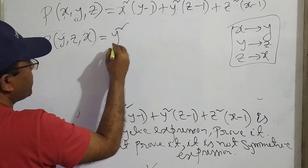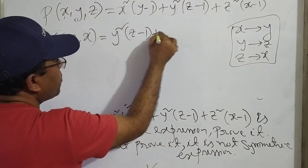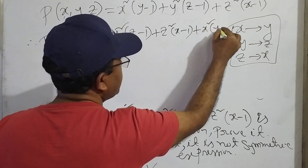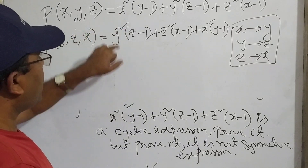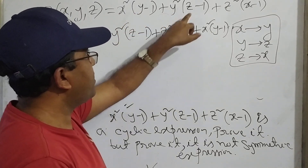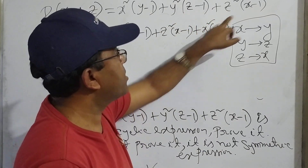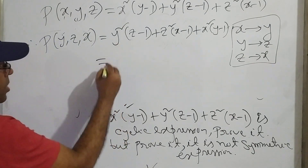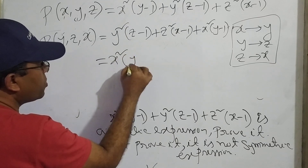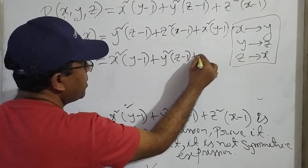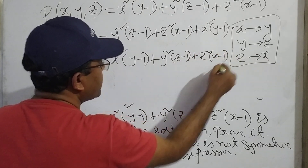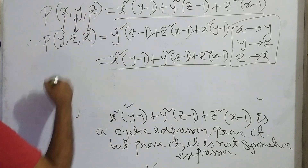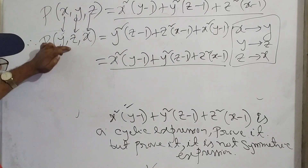After substitution: x squared becomes y squared, x is replaced by y; y is replaced by z; z is replaced by x. The expression x squared (y minus 1) plus y squared (z minus 1) plus z squared (x minus 1) remains unchanged. First is replaced by second, second is replaced by third, third is replaced by first.